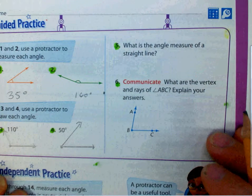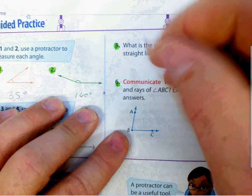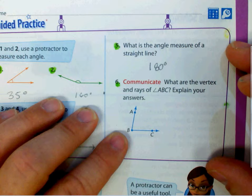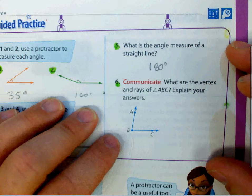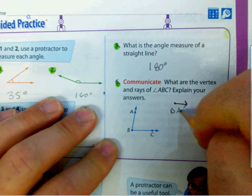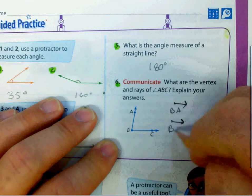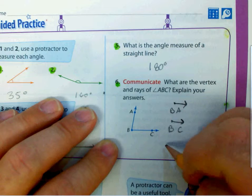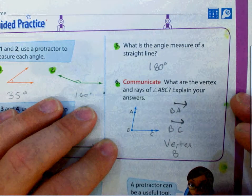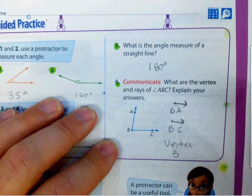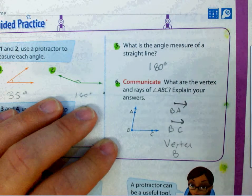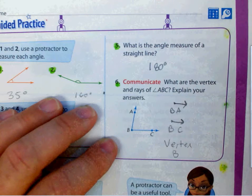Question number five says: what is the angle measure of a straight angle? A straight angle is 180 degrees. And what are the vertex and rays of angle ABC? The rays are going to be ray BA and ray BC, and the vertex is vertex B. A vertex is where the two rays of an angle meet.